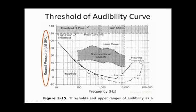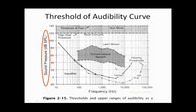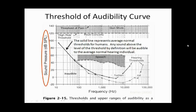For illustration, here are the average thresholds for a cat. They most likely obtained this using the auditory brainstem response to estimate where the pure tone thresholds would be. So these are average thresholds in dB SPL. The solid line represents average normal thresholds for humans, and any sound above the level of the threshold by definition will be audible to the average normal hearing individual.